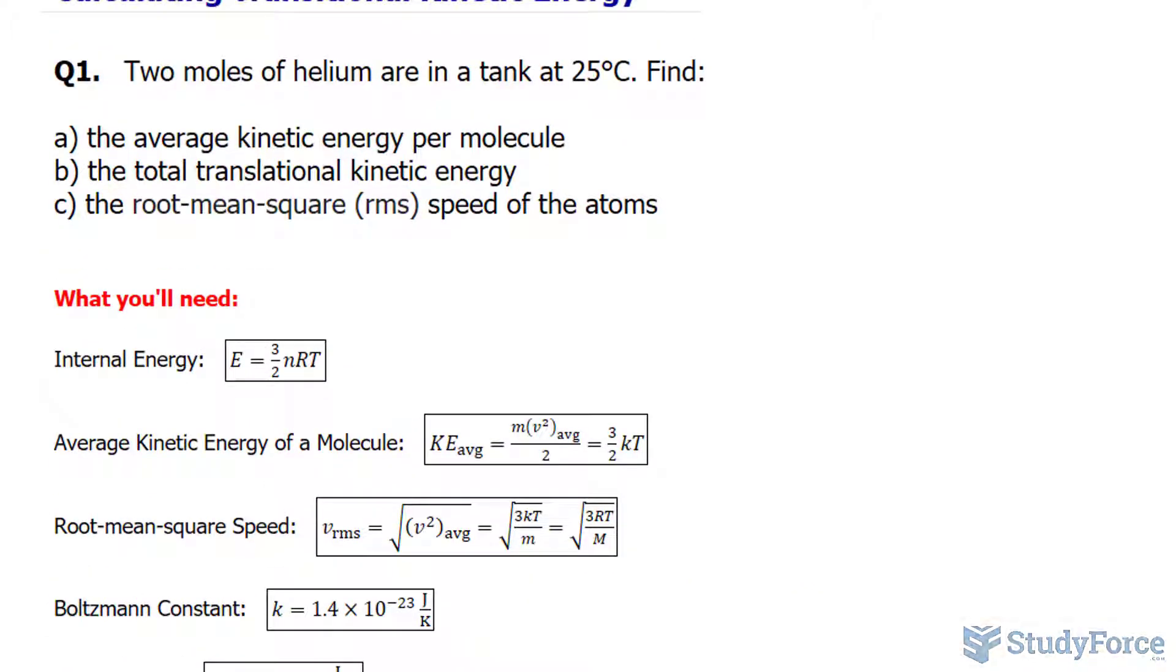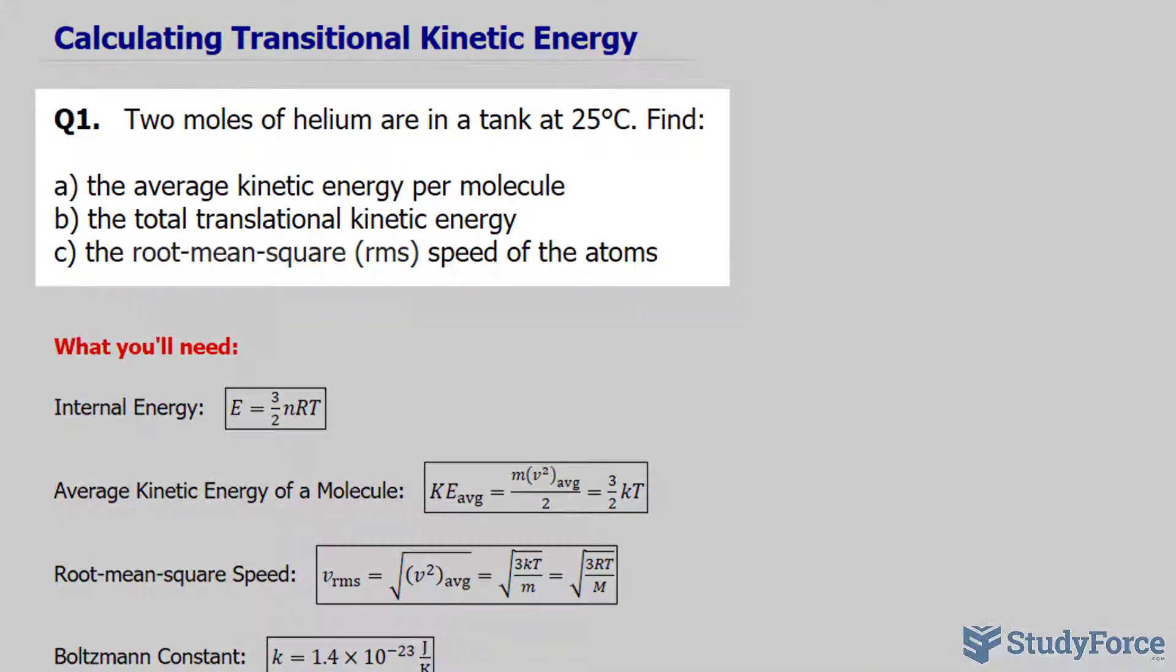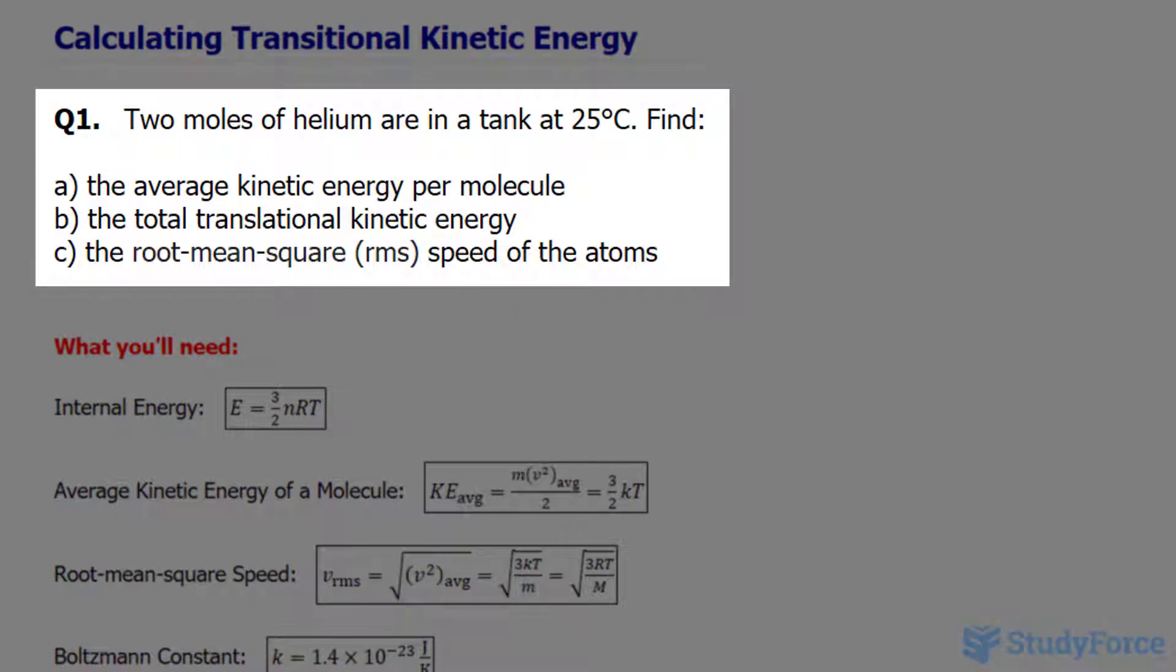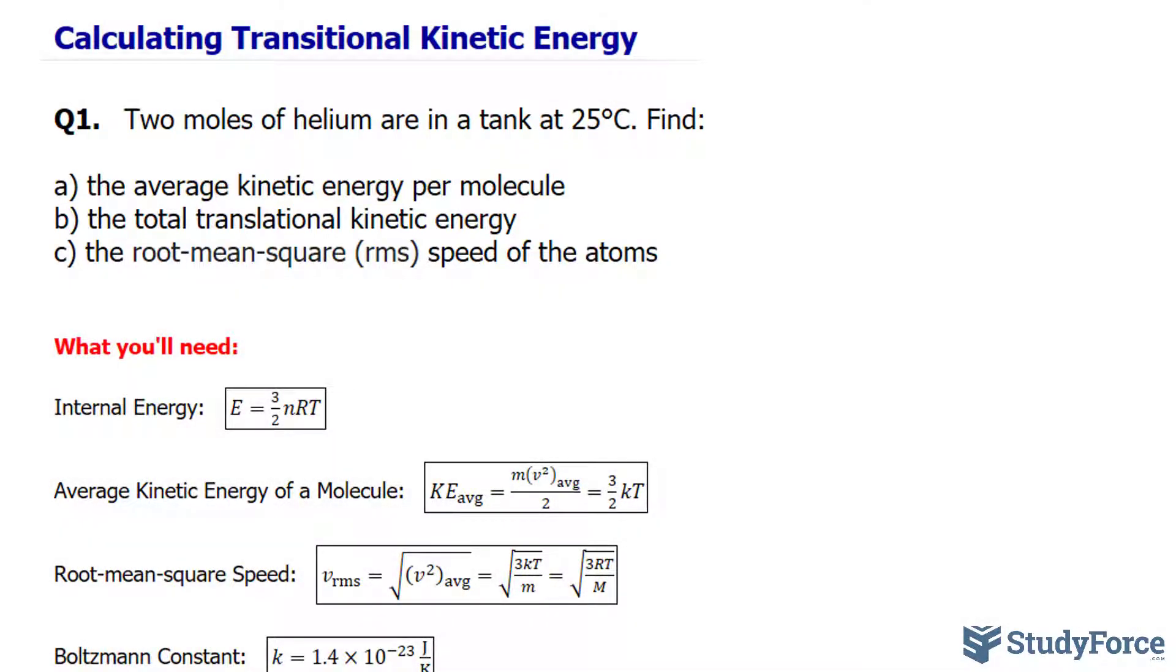We'll start with question one which asks: two moles of helium are in a tank at 25 degrees Celsius. Find A, the average kinetic energy, and then we'll work on B and C later.